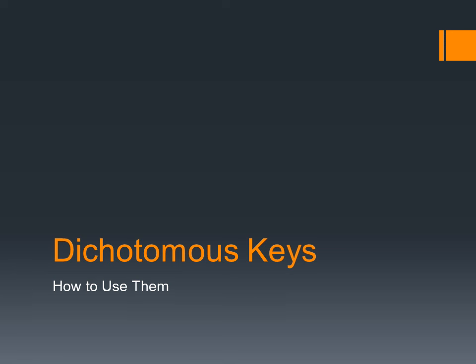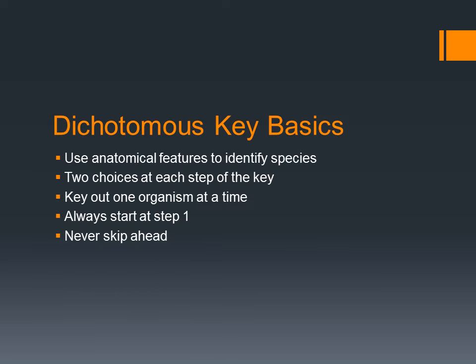Hi guys. This video is on dichotomous keys and specifically how to use dichotomous keys to identify species. Dichotomous keys use anatomical features — which really just means the way that an organism looks — to identify what species it belongs to.